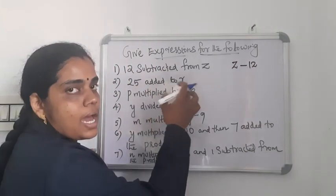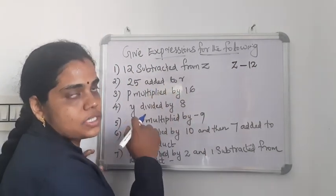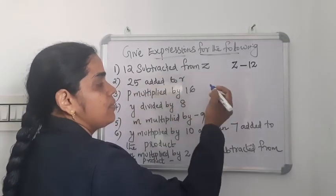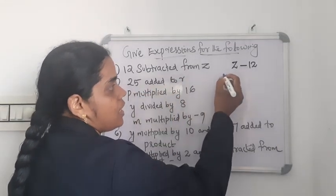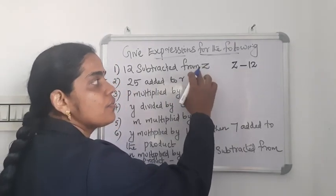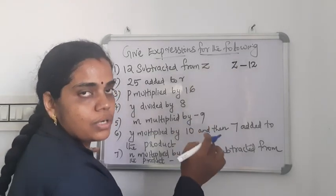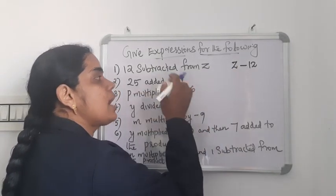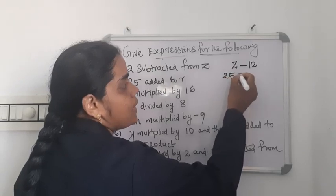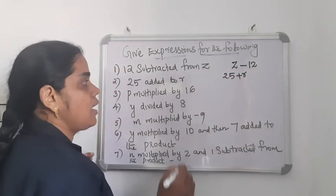Then: 25 added to R. The operation is addition. In addition, either R or 25 can be written first. But in the case of subtraction, you need to write the variable first — like Z in the previous example. For 25 added to R, we can write 25 plus R or R plus 25 — both are correct.